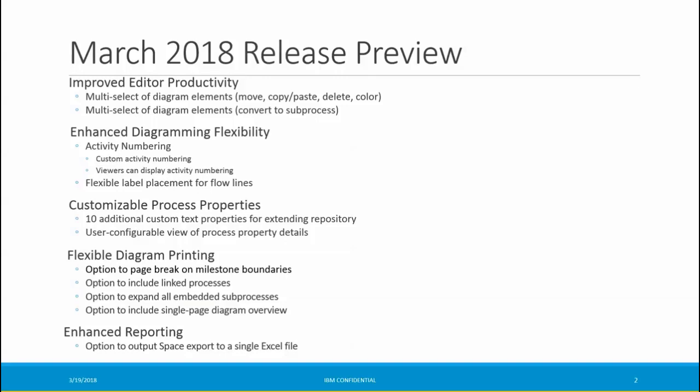We've also enabled further customization of process properties, so all users can configure their property details panel to hide, display, and reorder properties. We've also added 10 custom text properties for extending the repository. We've added more flexible printing options, so process diagrams can be printed with page breaks on milestone boundaries. You can include link processes in the printouts, choose to include all sub-processes already expanded, and include a single page diagram overview. We've also enhanced reporting, with a new format for the Excel space export which allows subspaces to be exported to a single file.